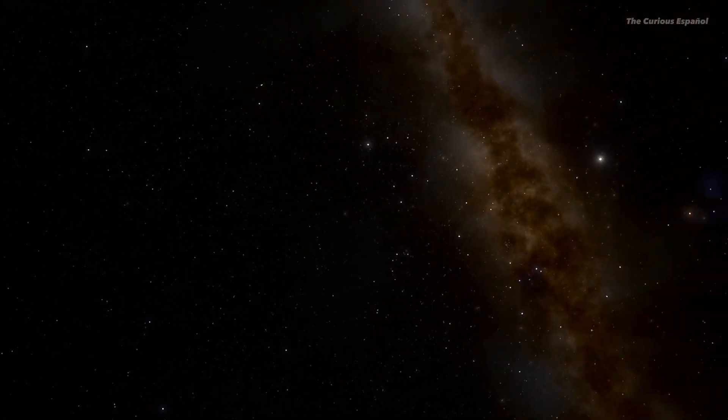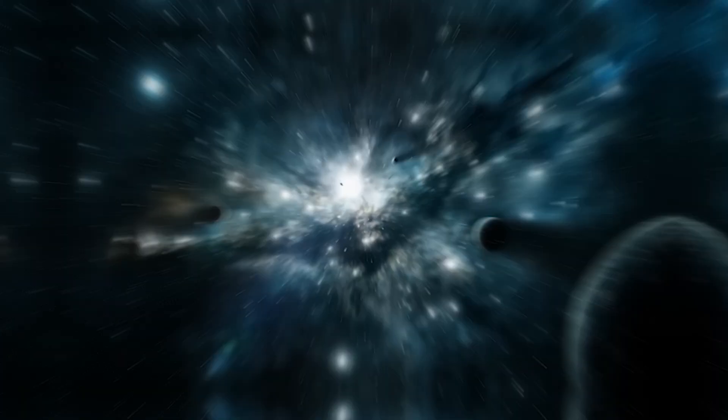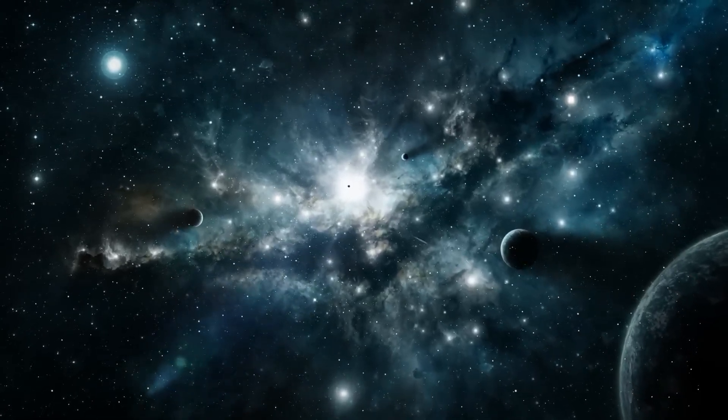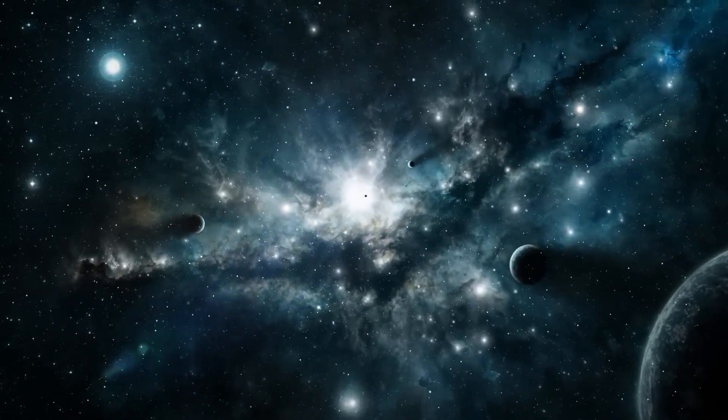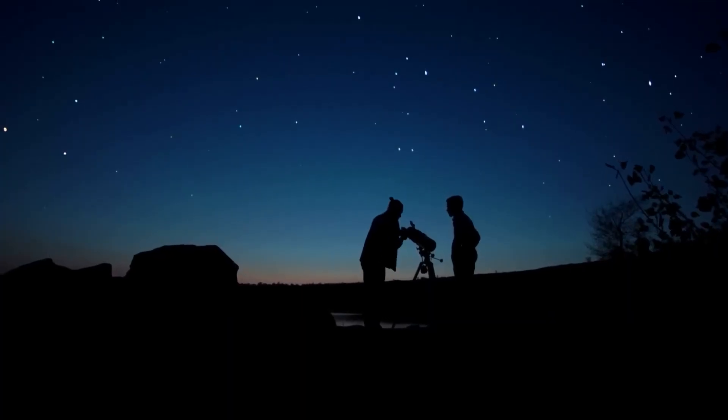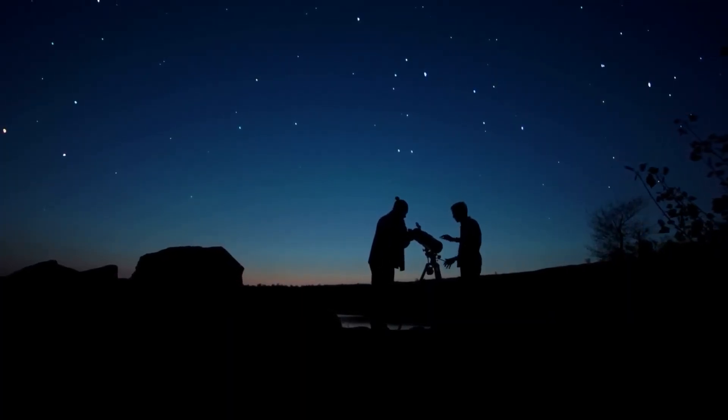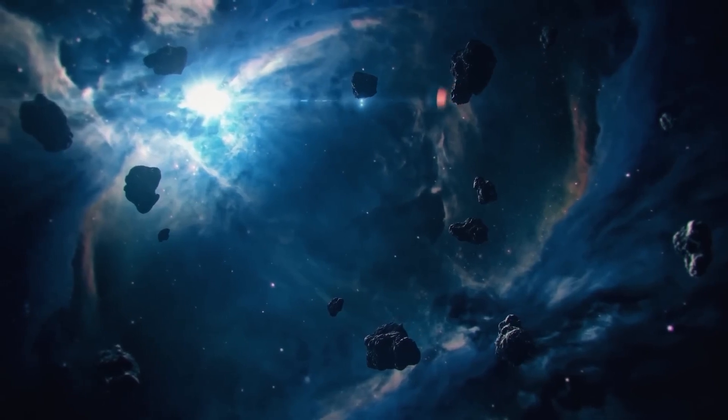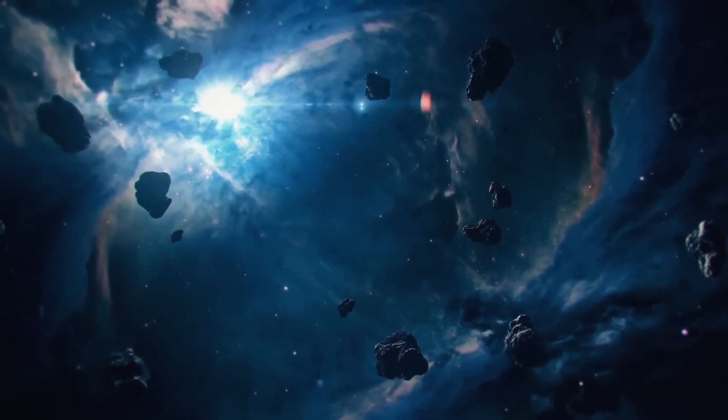Trappist-1, an ultra-cool dwarf star, hosts seven rocky planets, three of which reside in the habitable zone. This system has fascinated scientists for years, and the super-Earth is now the crown jewel of its discoveries.